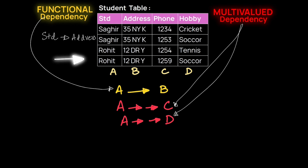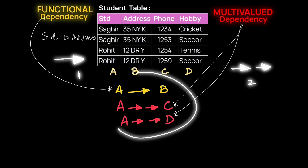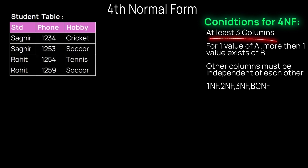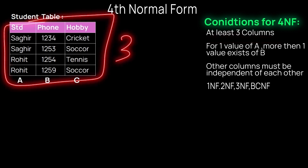One arrow signifies functional dependency between two attributes. The conditions for fourth normal form are: first, the table must have at least three columns — there is no point if there are only two columns. Second, for one value of A, more than one value of B must exist.